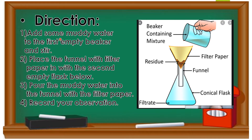Step one: add some muddy water to the first empty beaker and stir. Step two: place the funnel with the filter paper into a second empty flask below it. Step three: pour the muddy water into the funnel with the filter paper, then record your observations.